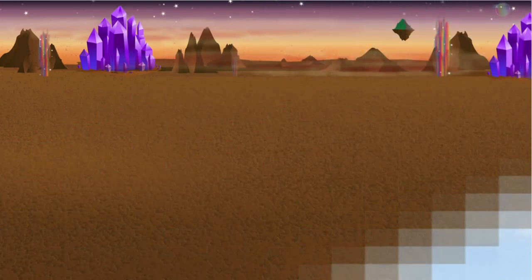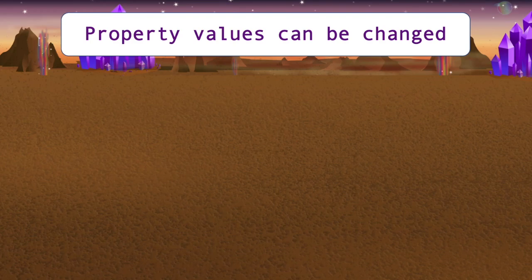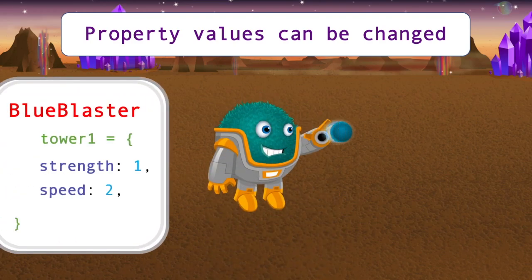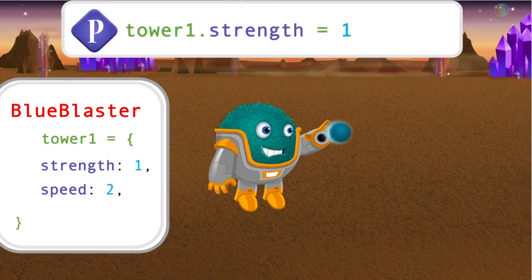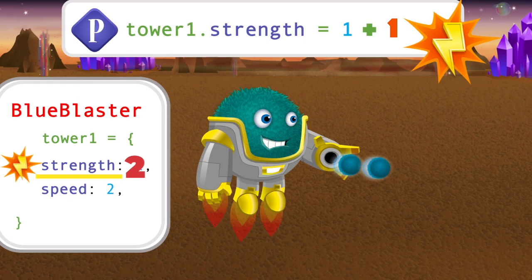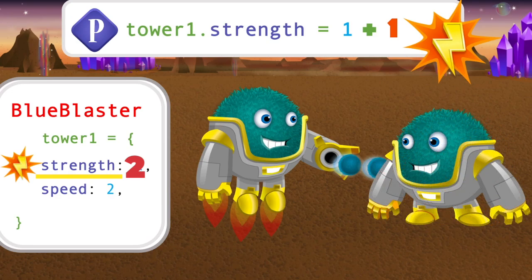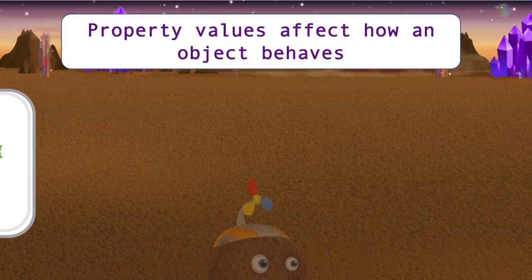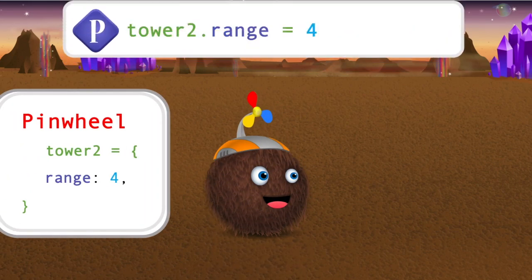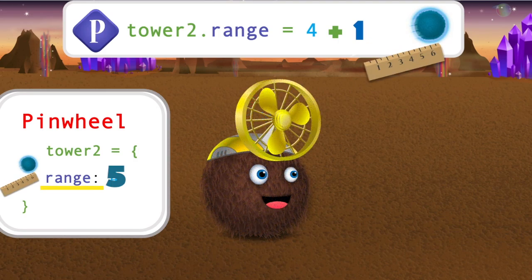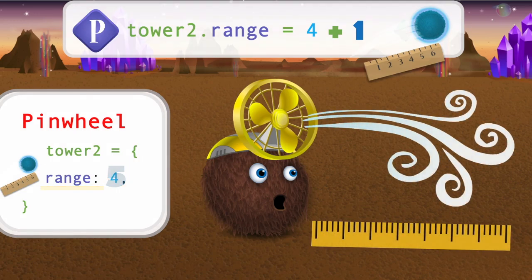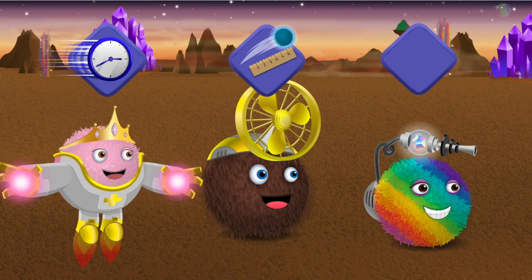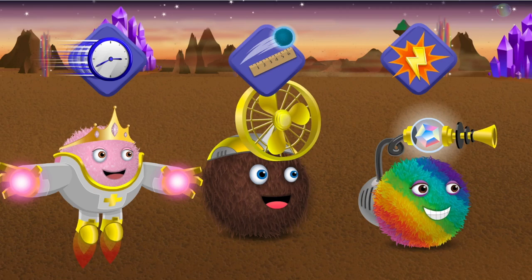Properties are super helpful when making and playing games for a couple of reasons. First, property values can be changed. In Bug World, increasing the value of the strength property for a Blue Blaster like this does not automatically increase the strength of any other Blue Blaster too. Properties allow you to change a single object without causing a change in any other object. Second, property values affect how an object behaves. Pinwheel has a range property. Changing the value of Pinwheel's range property from 4 to 5 will change the object's behavior — its wind will now reach slimes that are further away. In Bug World, you can change the property values to power up individual tower objects to defend against more dangerous slimes.